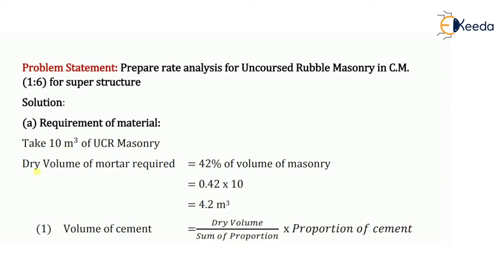The first step is to calculate the dry volume of mortar required. It is taken as 42% of volume of masonry. Here the volume of masonry is 10 meter cube, so 42% of that will be 0.42 into 10, which comes as 4.2 meter cube. This is the dry volume of mortar required for the UCR masonry.